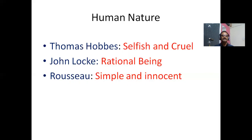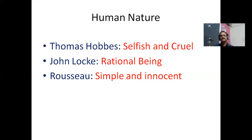Rousseau said that during the state of nature, human beings were simple and innocent — a noble savage. He lived very close to nature and was therefore very simple and innocent. He enjoyed real freedom during the state of nature because he did not know modern characteristics like jealousy, competition, or conspiracy. All these were absent when he lived closer to nature. That is what Rousseau said about human nature.